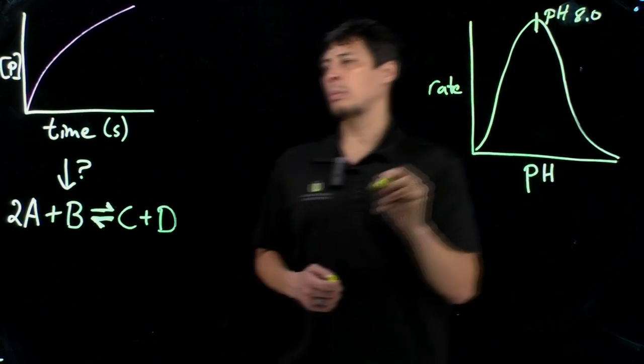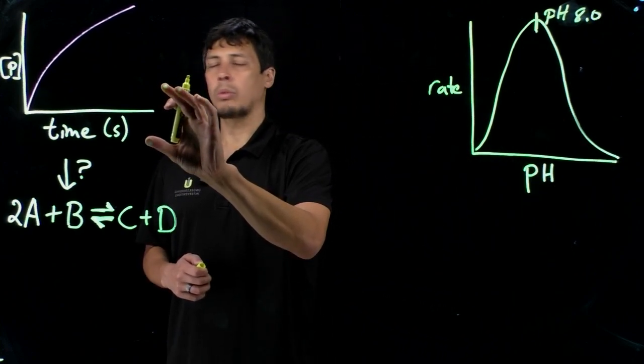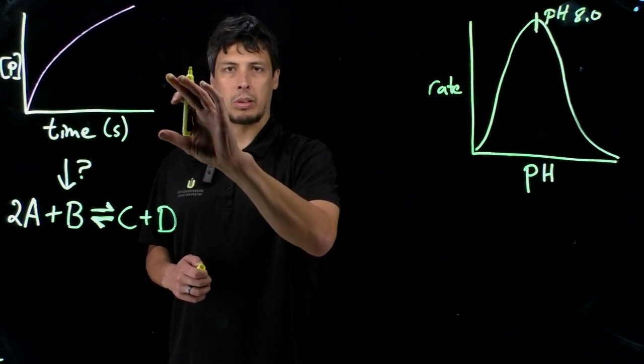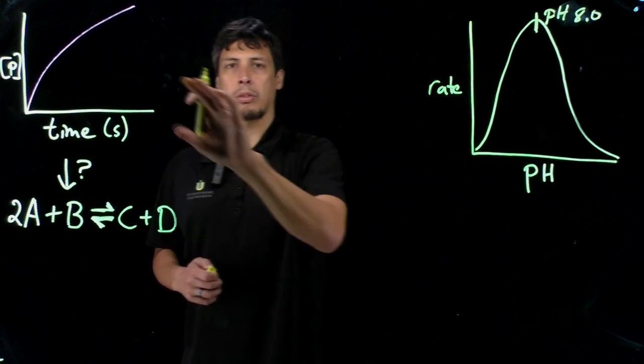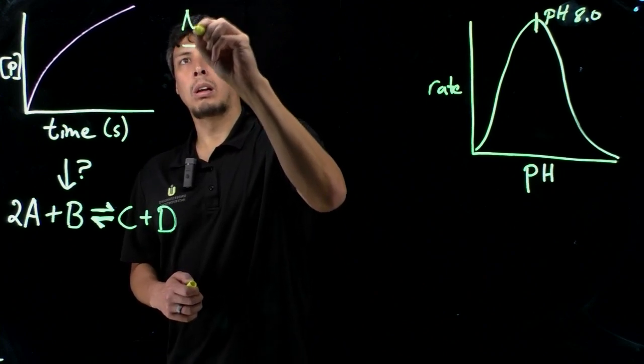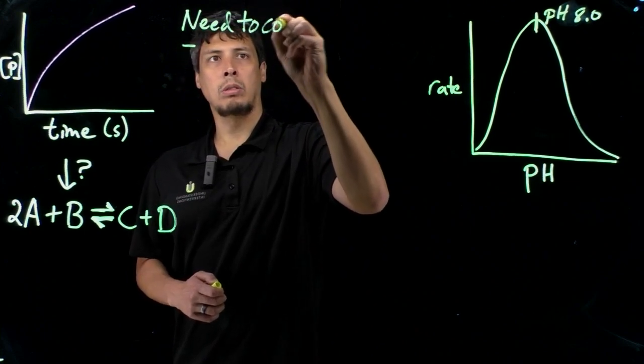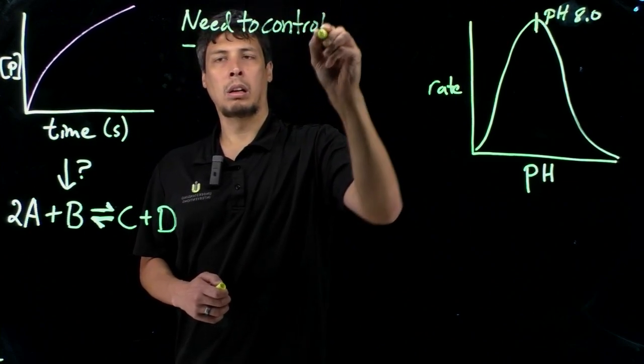We have to remember then, that when we're designing an experiment to look at the time dependence of product formation for an enzyme, we need to control pH.